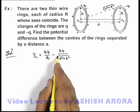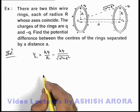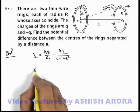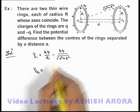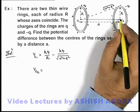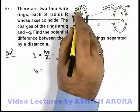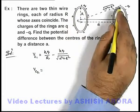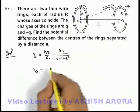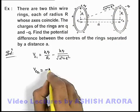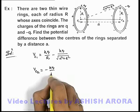These expressions we have already studied in the previous sections. Now we can also find out the potential at the center of the other ring. So it is due to its own charge plus due to the charge on this ring. And due to its own charge, we'll use the result of potential at the center of the ring, which is minus kq by R.